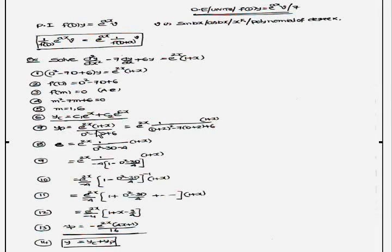Therefore particular integral equals e^(2x) into (1+x) by denominator D² - 7D + 6. So in this type of problems, having e^x combination, first you write the e^(2x) replace D with D+a. That means (D+2)² - 7(D+2) + 6 into (1+x).